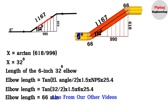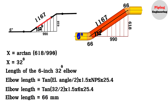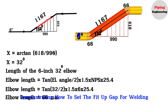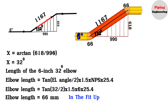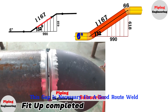Also, from our other videos, we learned that during fit-up a small gap is required for welding — approximately 3 to 4 millimeters. I will now show a small practical fragment demonstrating how to set the fit-up gap for welding, so you can get an idea of the gap in the fit-up. This gap is necessary for a good root weld.